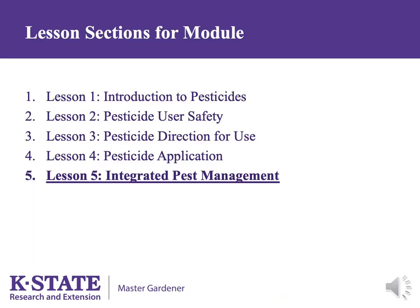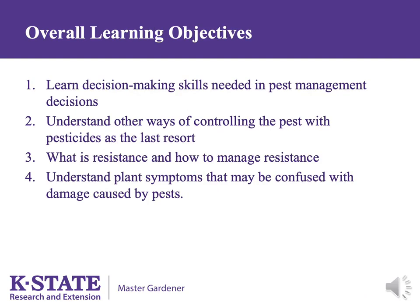This is the last of the five sections for this module. The learning objectives include learning decision-making skills needed in pest management, understanding methods of controlling pests with the use of pesticides as a last resort, understanding resistance and how it is managed, learning the definition of common terms used in pest control, and understanding plant symptoms that may be confused with damage caused by pests.